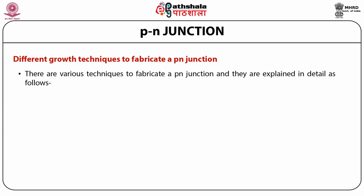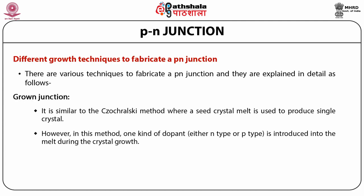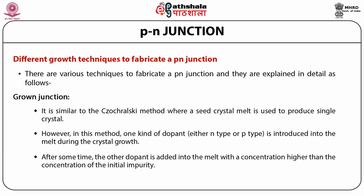Let us now discuss the different growth techniques to fabricate a PN junction. The first is the grown junction, which is similar to the Czochralski method where a seed crystal melt is used to produce a single crystal. In this method, one kind of dopant — either n-type or p-type — is introduced into the melt. After some time, the other dopant is added at a concentration higher than the initial impurity. This abrupt change in impurity results in the formation of a PN junction, so a single crystal consists of both p-type and n-type semiconductors.